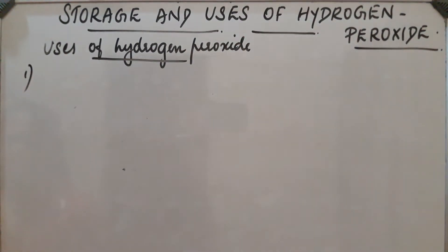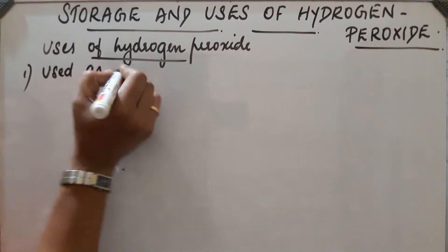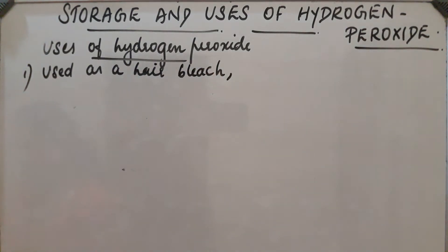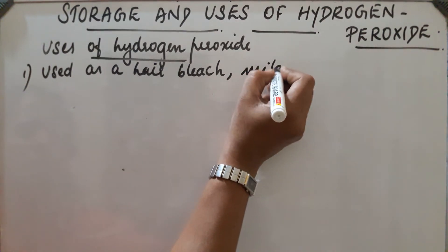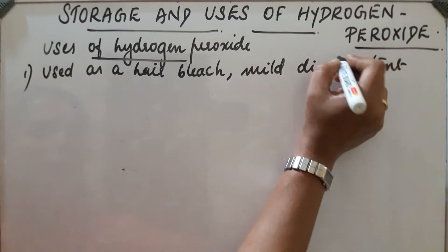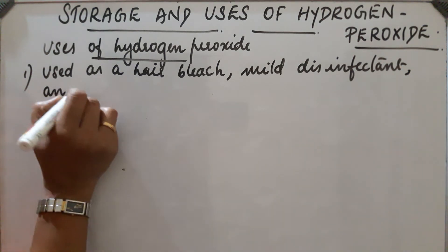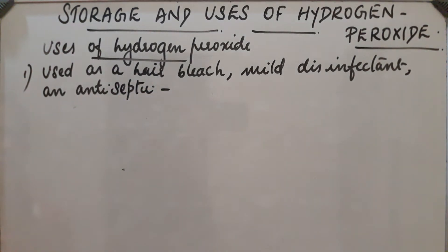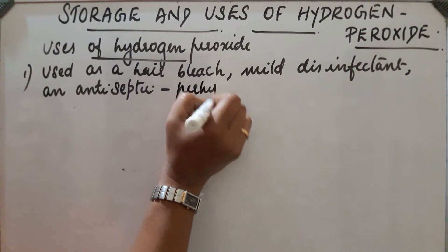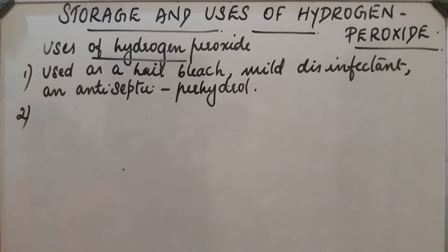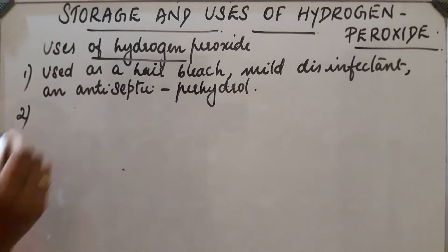Next, uses of hydrogen peroxide. First, it is used in daily life — as a hair bleach, as a mild disinfectant, and as an antiseptic. In the market it is sold under the name perhydrol.